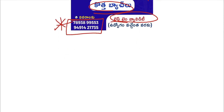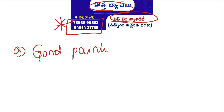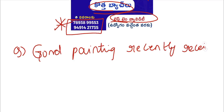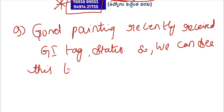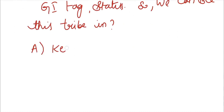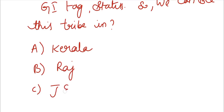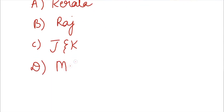Practice question: Gond painting recently received GI tag — Geographical Indication tag status. Where can we see this tribe? Options: A. Kerala, B. Rajasthan, C. Jammu and Kashmir, D. Madhya Pradesh. The correct answer is D. Madhya Pradesh.